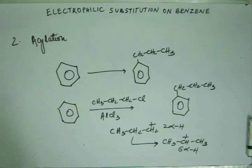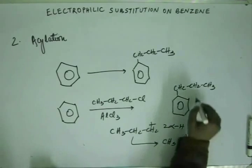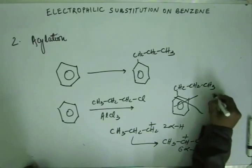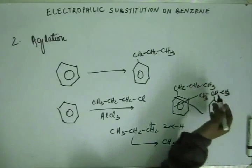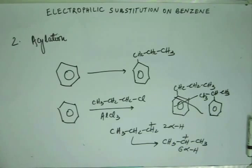So my electrophile has been transformed — the plus charge is now on the second carbon. I'm not going to get n-propylbenzene; instead I'm going to get cumene (isopropylbenzene). So this is not a good method and will not fetch marks.